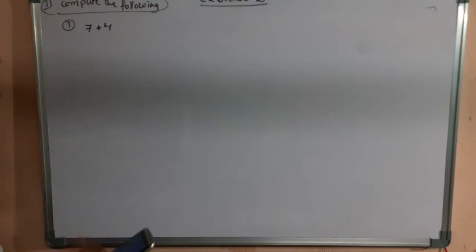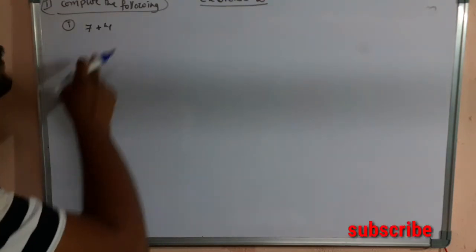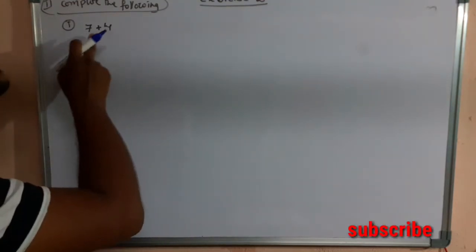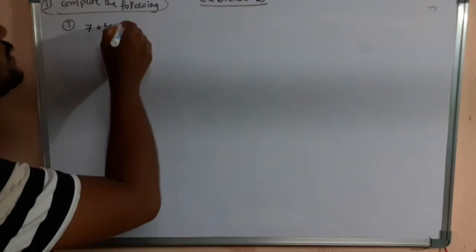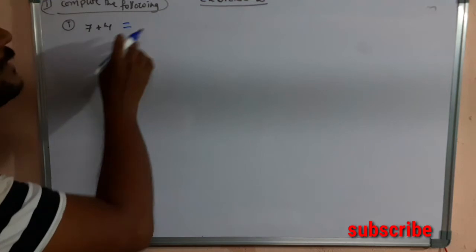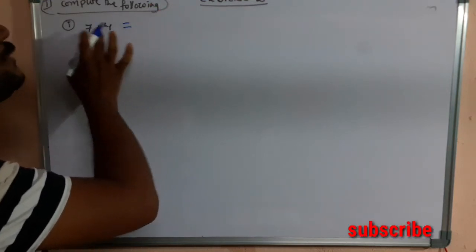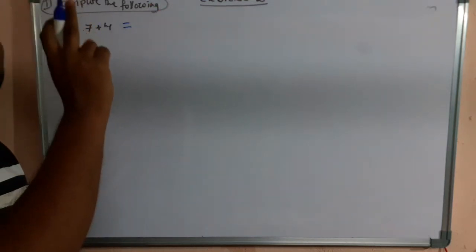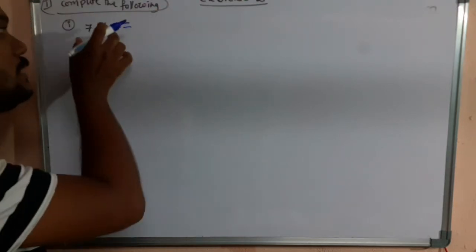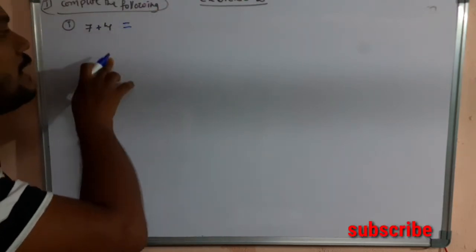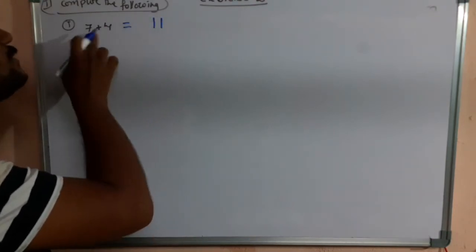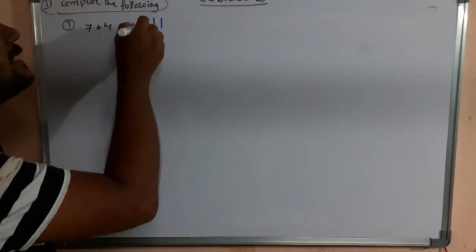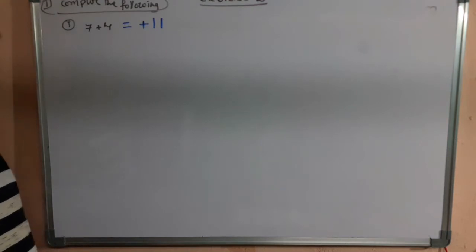Let's see the first question: 7 + 4. These two are like integers. To add like integers, we just add their numerical values. The absolute value of 7 is 7 and the absolute value of 4 is 4. Adding them gives 11. Since both numbers are positive, the answer is also positive: +11.